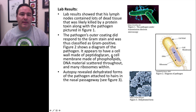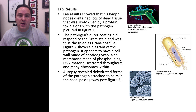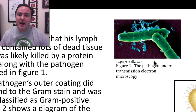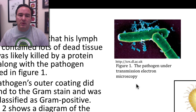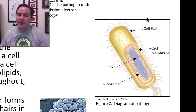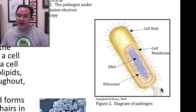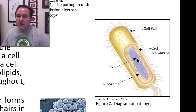Lab results showed that his lymph nodes contained lots of dead tissue, likely killed by a protein toxin. A pathogen was found — a picture of it is shown here. The pathogen's outer coating did respond to a gram stain test, so it was classified as gram positive. Figure 2 shows a diagram of this pathogen. It appears to have a cell wall, a cellular membrane on the inside, DNA in the middle, and ribosomes floating around inside the structure.